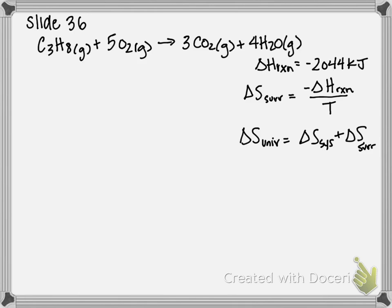For this, we're going to be using the equation that is written right here. The change in entropy of our surroundings is equal to the negative delta H of our reaction, which has been provided in the problem, over our temperature, and temperature has to be in Kelvin.